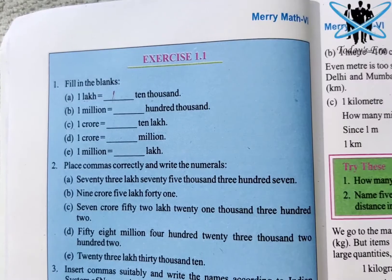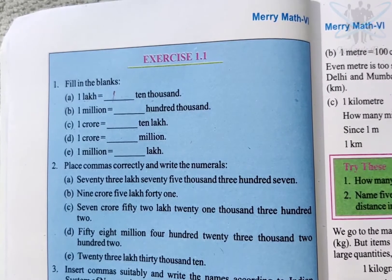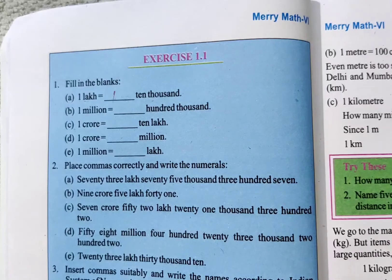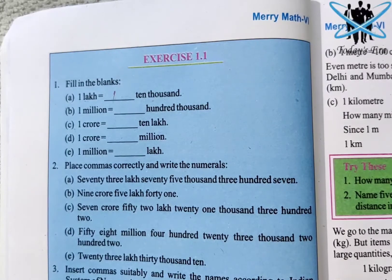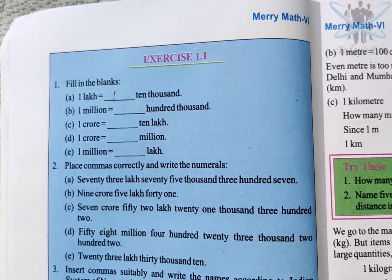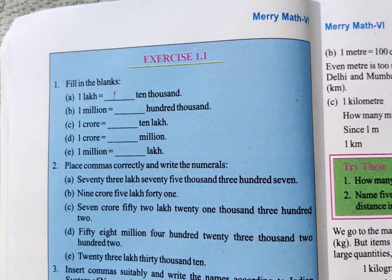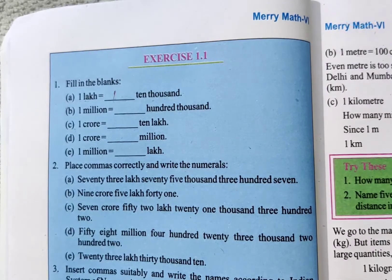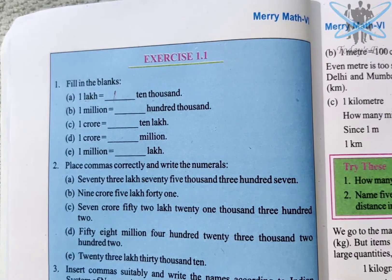So let's start. Today we are going to start Exercise 1.1, Question Number 1 — that is 'Fill in the Blanks.' Some blanks are given and you have to fill them: one lakh equals to dash ten thousand, one million equals to dash hundred thousand, one crore equals to dash ten lakh, one crore equals to dash million, and one million equals to dash lakh. We will do this in a practical way.